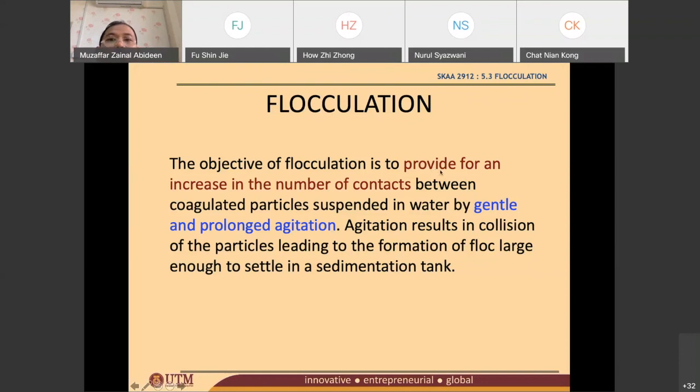If you look at the definition of flocculation, it says to provide an increased number in contact by gentle and prolonged agitation. That's why you have to gently stir the chemicals in the water very slowly so that it will increase the number of contacts between particles. Once they increase the number of contact, they will collide with each other and form a bigger size of particle, so it will be easily removed in the next process in the sedimentation process.